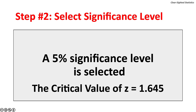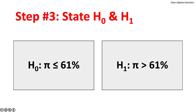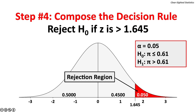Step 2: Select the significance level. A 5% significance level is selected. The critical value of Z is 1.645. This normal curve shows the critical value at a 5% significance level, with the red tail on the right showing the rejection region. Step 3: State the null and alternate hypotheses. Null hypothesis: pi is less than or equal to 61%. Alternate hypothesis: pi is greater than 61%. Step 4: Compose the decision rule. Reject the null hypothesis if Z is greater than 1.645. The area in the red is the rejection region, representing the upper 5% of the normal curve.